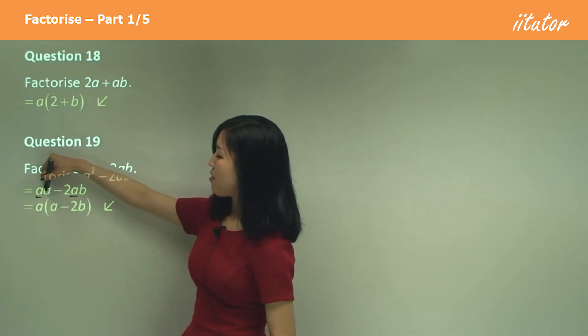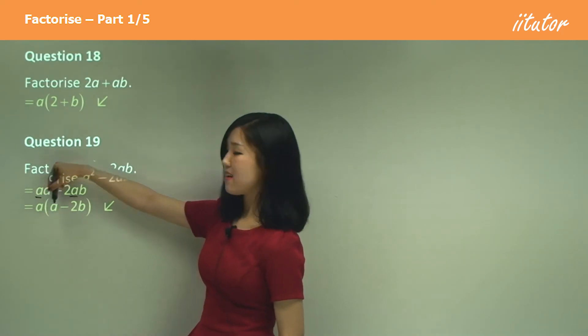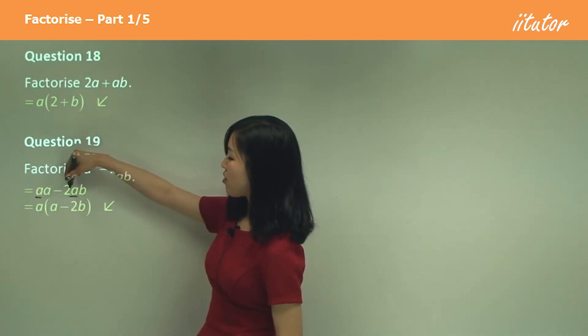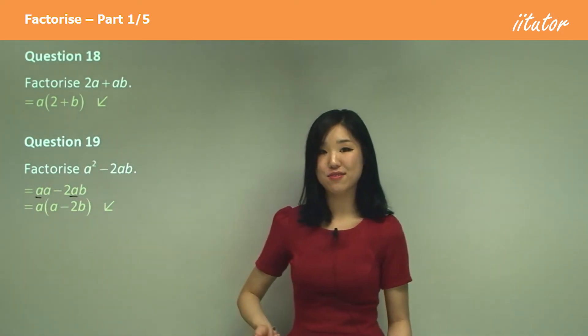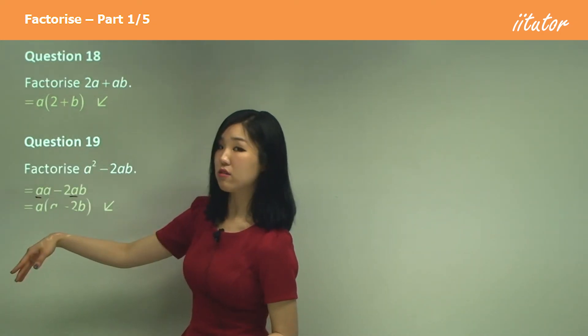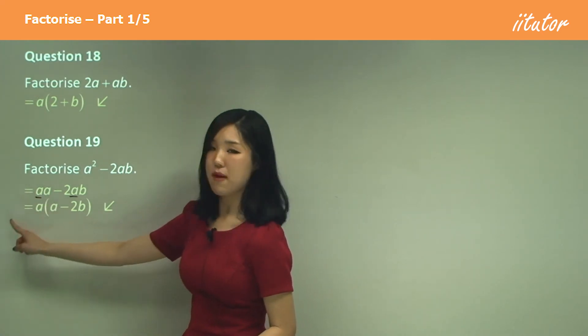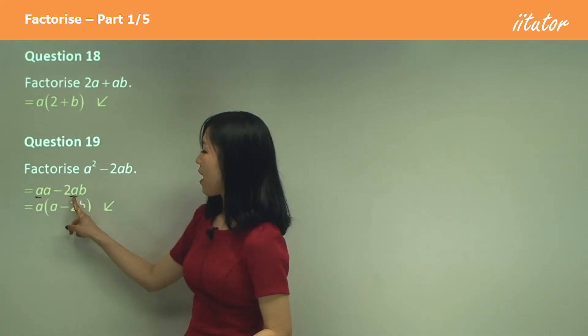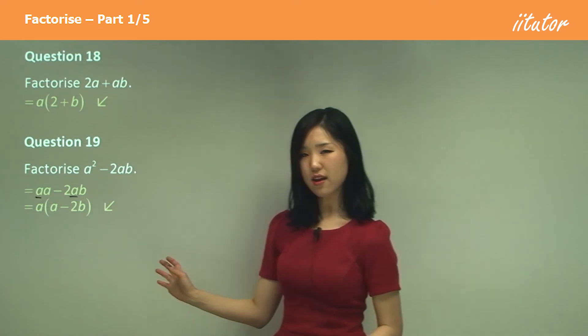And here I took a out, so we just have minus 2b left. So make sure—although a is common, don't take the whole thing out. You only take one of them out because that one has only one a. Get the idea?